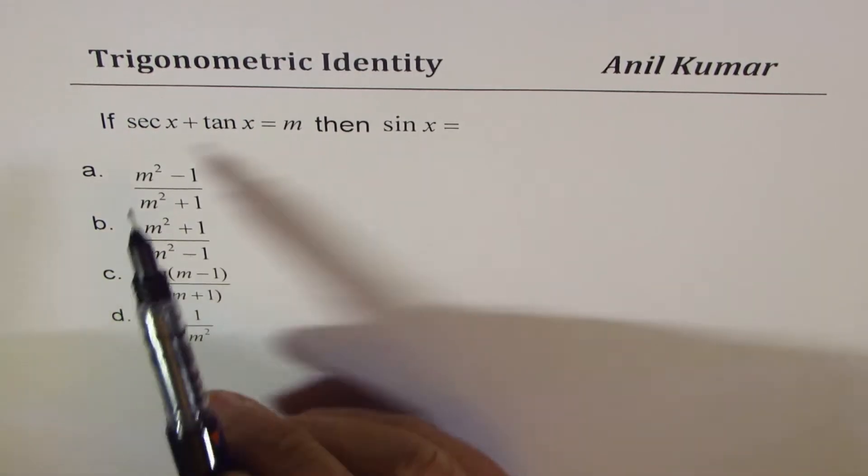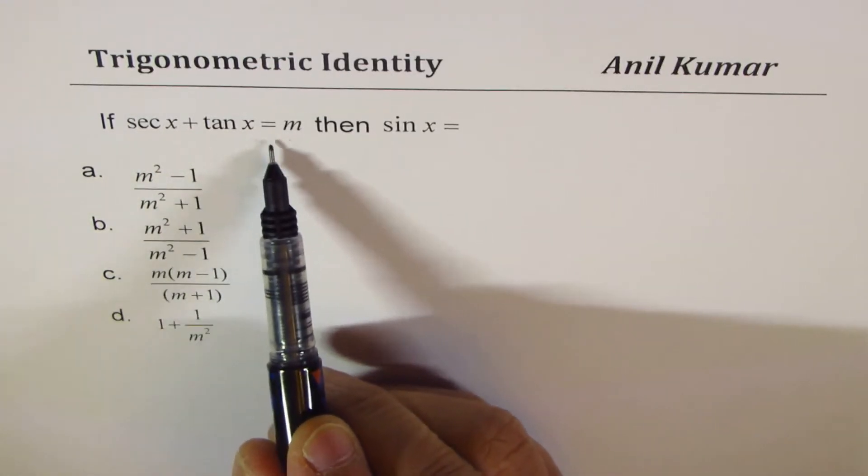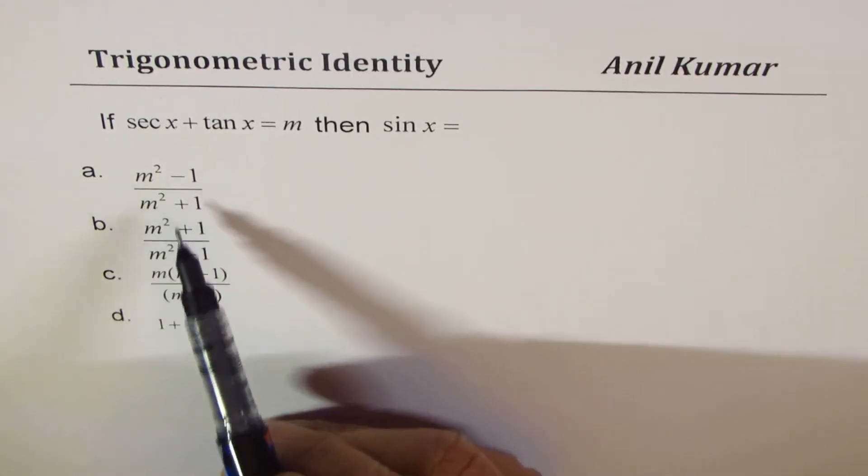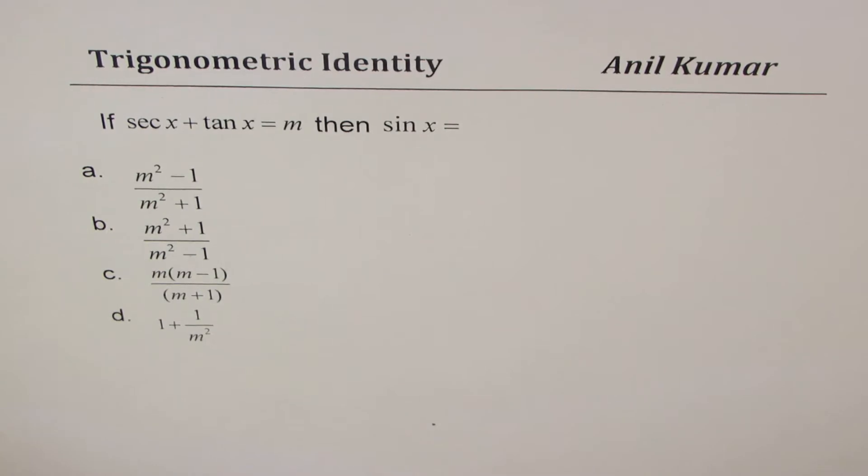The question here is, if secant x plus tan x equals to m, then sin x is equal to what? We have given four choices.